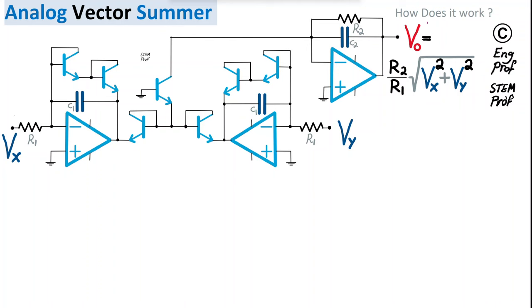If we can prove this, it is effectively an analog computer performing vector calculus, with many applications including vector calculations and RMS summation.